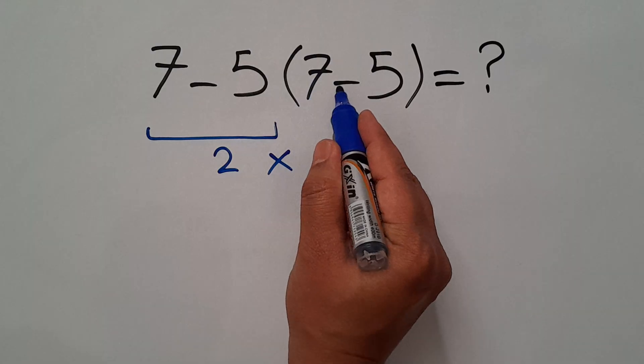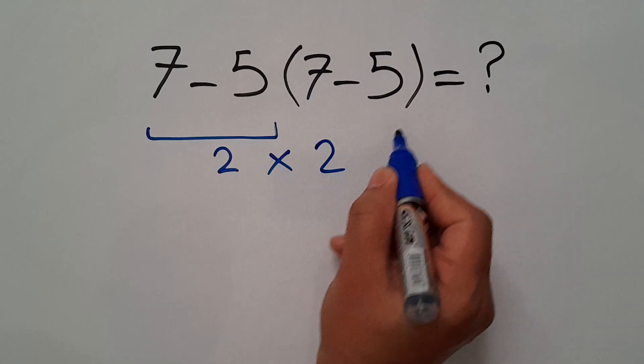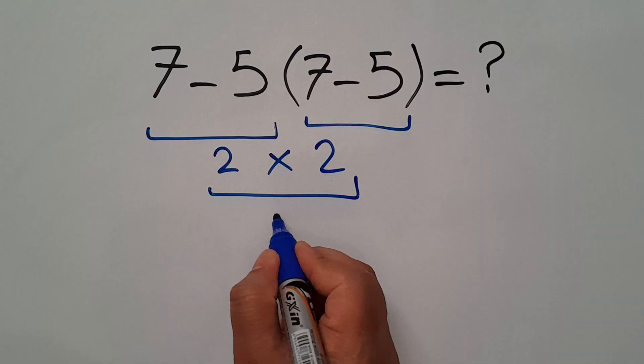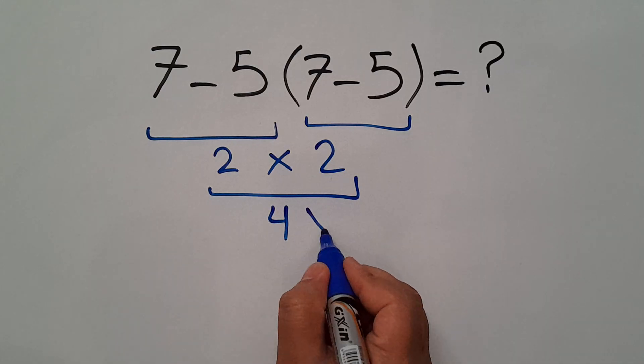Again we have here 7 minus 5 which equals 2, so 2 times 2 equals just 4. But this answer is not correct.